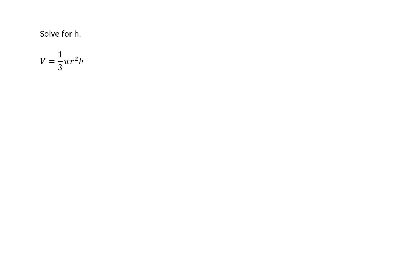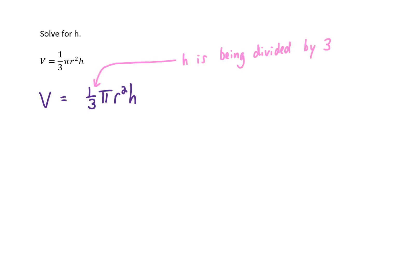Let's do one more, slightly more complicated example — solve for h in the volume of a cone formula, where h is height and r is radius. The one-third out in front means h is being divided by 3. To reverse that, we multiply both sides by 3. On the left we get 3V, and on the right the 3 cancels the one-third, leaving pi r squared times h.